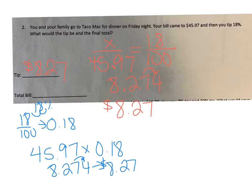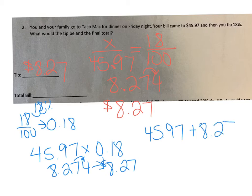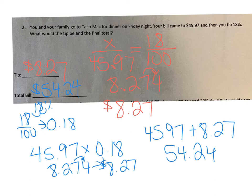To figure out the total bill including the tip, take your $45.97 and add the $8.27, which gives you $54.24. So find your tip first, then add it back to your bill to get your final total. Go ahead and do number one and three, then check the key.